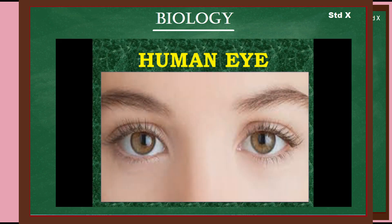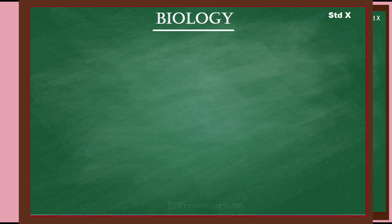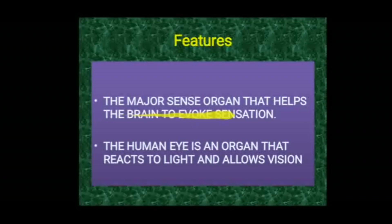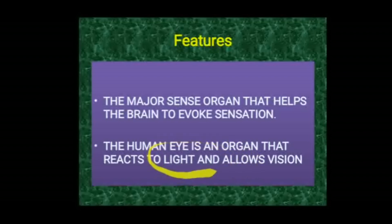Let's start the first part of this chapter — the human eye. The human eye is the major sense organ that helps the brain to evoke sensation. It is an organ that reacts to light and allows us vision. Photosensitive receptors are present inside the human eye, making it a sense organ related to light that helps in vision.